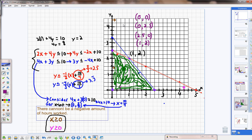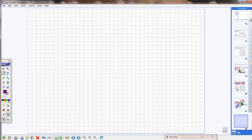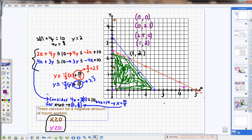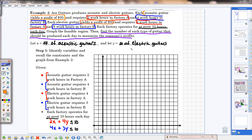Now that I have all my vertices, I can go back and identify what my objective function is. The objective function is in orange. And it tells me that an acoustic guitar yields a profit of $30. Electric guitar yields a profit of $50. So if I'm attempting to write an objective function for this, I know that my profit is going to be equal to, and this is my objective function for the next step, p is going to be equal to 30x plus 50y. This is my objective function that I need to plug all of those vertices into in order to determine the maximum.